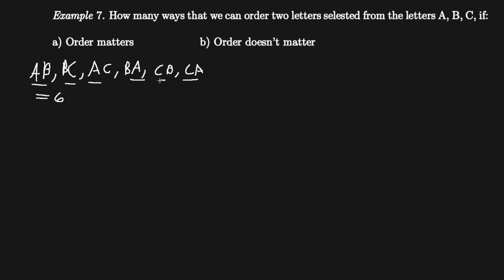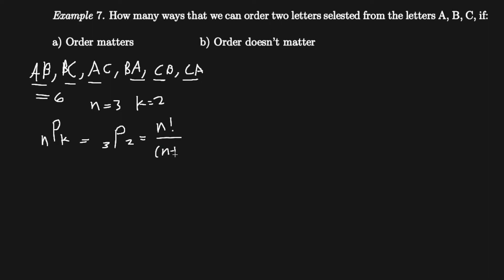That's one way to count, but another way is what we call permutation. The formula is n P k. If we set n equal to 3 and k equal to 2, we call this '3 permute 2.' This is equal to 3 permute 2, which equals n factorial over (n minus k) factorial. Plugging in our values, we get 3 factorial over (3 minus 2) factorial.